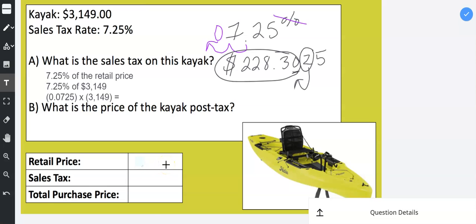The retail price was $3,149. And then the sales tax was $228.30. It's going to go to the government. I'll try to line up those decimals.